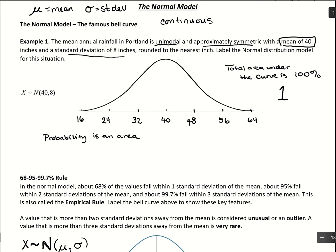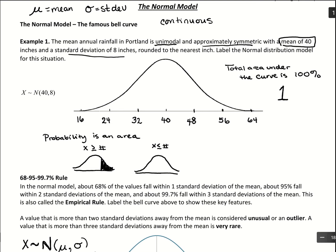There are three cases we look at. We could look for x being larger than or equal to some number, giving us the area in the right tail — for example, the probability rainfall was over 48 inches. We could also look at x being smaller than something, like the probability Portland rainfall was less than 24 inches, finding the area on the left-hand side. Or we could find the probability of being between two values, like between 24 and 48 inches, finding the area between a lower and upper bound.